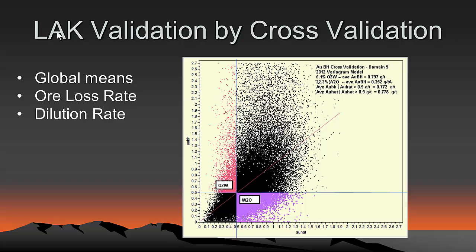So how can we check LAK validation to know whether or not it's doing anything good for us? Well, we can look at global means and then look at the ore loss and the dilution rate. So we can do something like a cross-validation. And if we want to compare LAK to, for example, ordinary kriging or inverse distance squared or whatever other algorithm you like, we can do cross-validation with ordinary kriging or with your interpolator, and we can also do it with local anisotropy kriging and then compare the results.